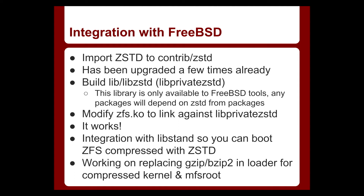The approach we used to integrate ZStandard into FreeBSD was to import a copy of ZStandard into Contrib ZStandard. It's already been updated a couple of times — when we imported it, it was 1.1, and now we're up to 1.3. In the FreeBSD base system, we actually install LibZStandard as what we call a private library, meaning it's namespaced off so only applications that are part of FreeBSD use it. Third-party packages won't find it, so if something depends on ZStandard, they get the version from ports — meaning a newer version from packages won't conflict.